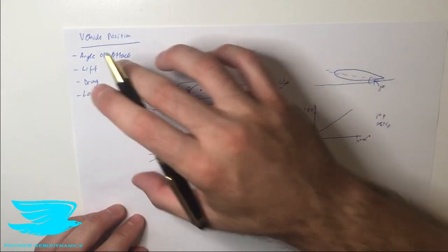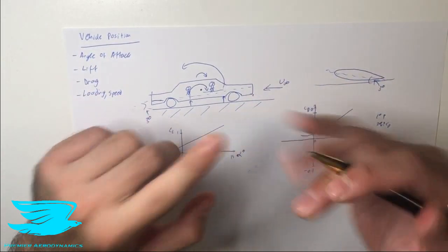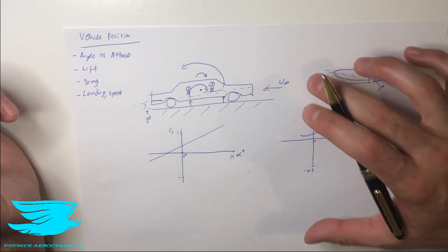So that is how the lift and the speed can affect the car's orientation, and again, the lift and the drag production. Now, just one final thing on the drag.